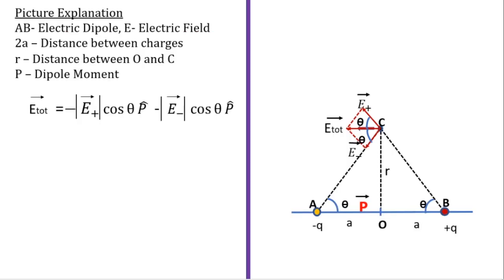So E total will be E plus cos theta in the unit vector of P direction and E minus cos theta in the unit vector of P direction. The minus sign comes from the P vector because the dipole moment is opposite in direction to the field. So E total is equal to minus of the magnitude of E plus cos theta times unit vector of P, minus the magnitude of E minus cos theta times P.